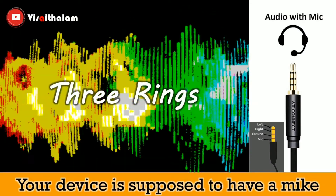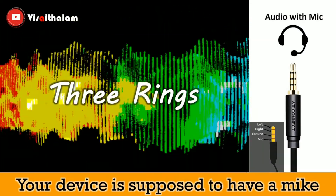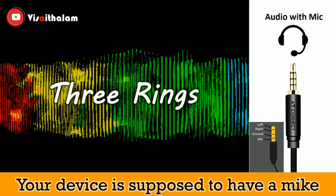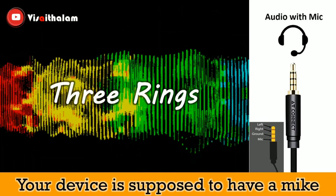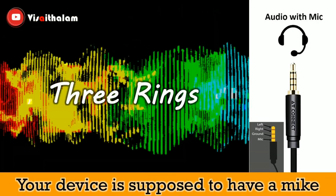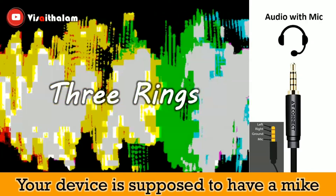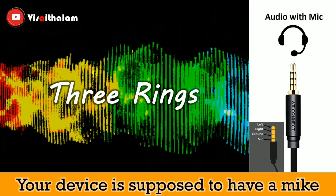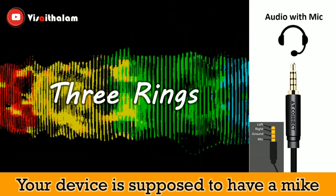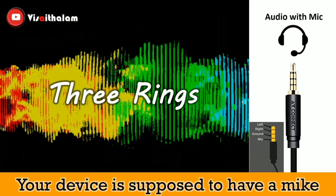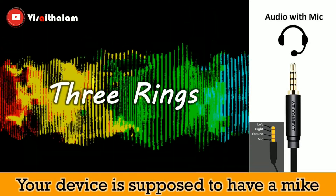The final one is the jack with three rings. Most devices nowadays come equipped with them. If you plug in a three-ringed audio jack to the device, it means your device is supposed to have a mic in it. In the picture, you can see that the three-ring jack is divided into four segments: first one for left, second one for right, third one for ground, and the final one for mic.